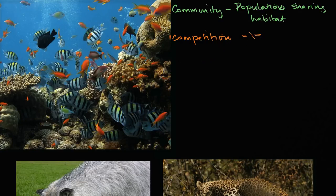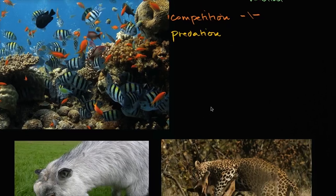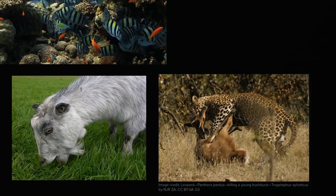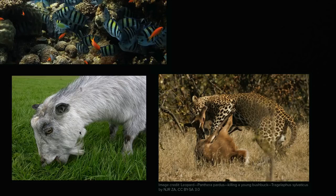The next form of inter-specific interaction is predation — when one population eats another population. You might associate predation with images like a cheetah hunting a gazelle, or in this case a young bushbuck. But predation isn't limited to such violent encounters. This picture of a goat eating grass is also predation — it's not as bloody, but it is still one species eating another species.